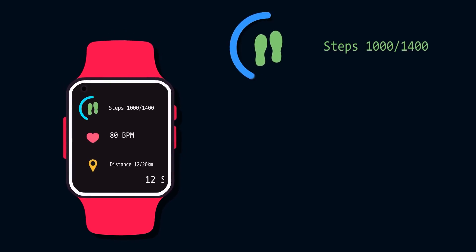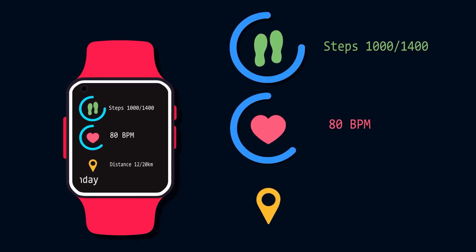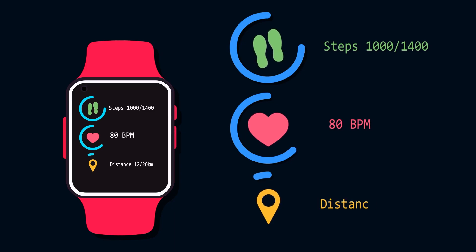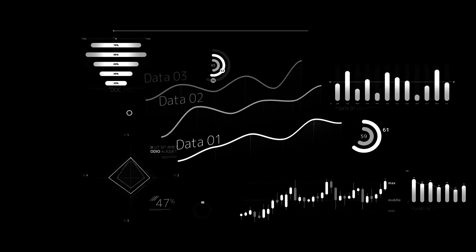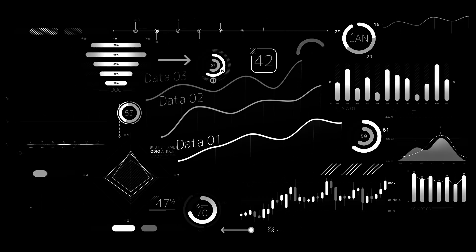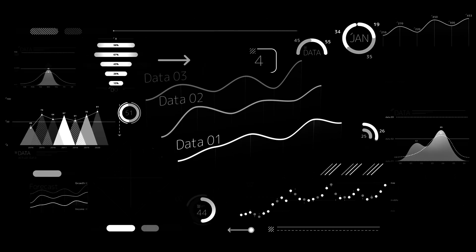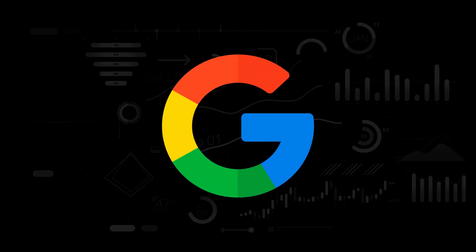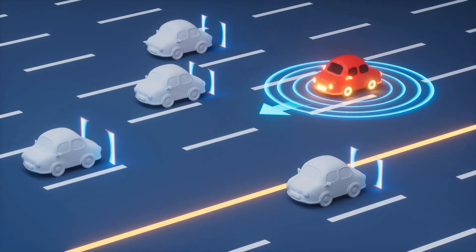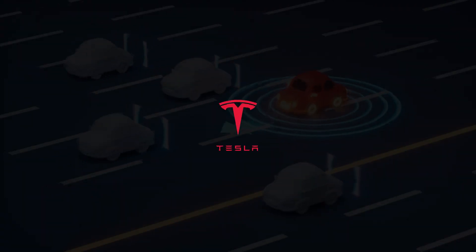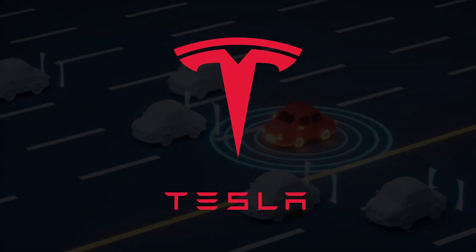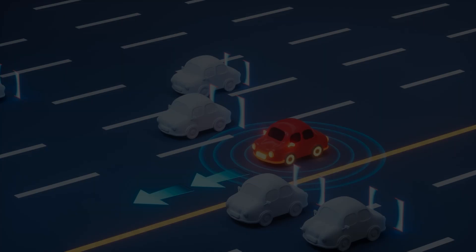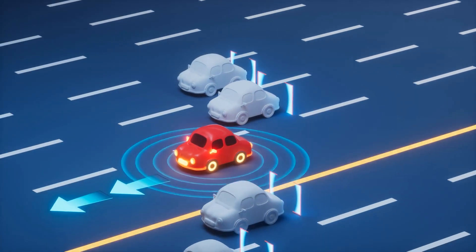Where are we headed? TinyML: imagine DL models small enough to run on your smartwatch, monitoring your health in real time. AutoML: AI that automatically designs other AI — Google already uses this to build better models. Hybrid AI: self-driving cars combining machine learning for decision making and deep learning for spotting pedestrians.